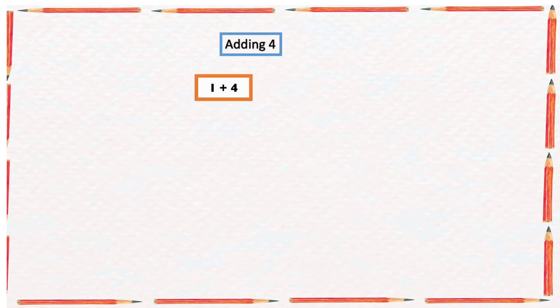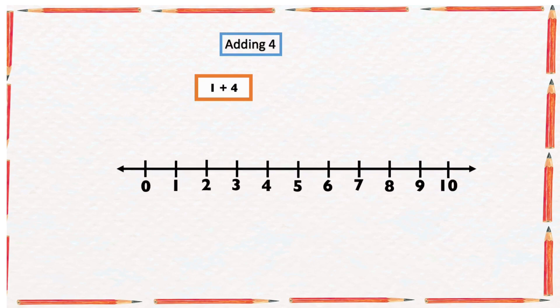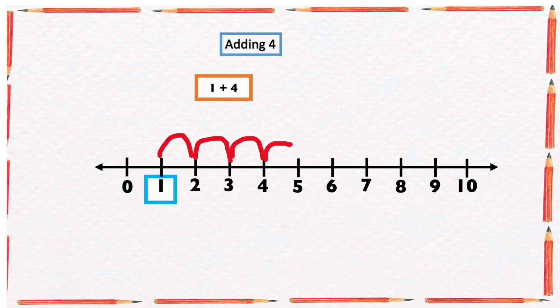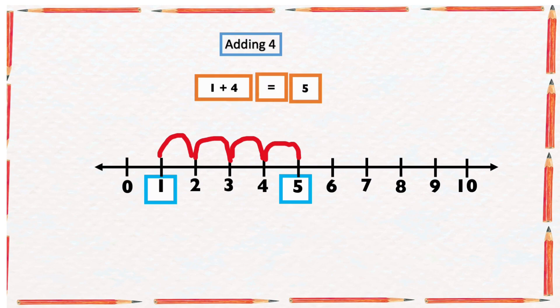This example says one plus four. Find the sum of one and four. To find the sum of one and four, we can start from the number one and count four numbers forward. Let's count: one, two, three, four. The arrow ended at five, so the sum of one and four gives us five. But this is a long way — we can do it in a simpler form.